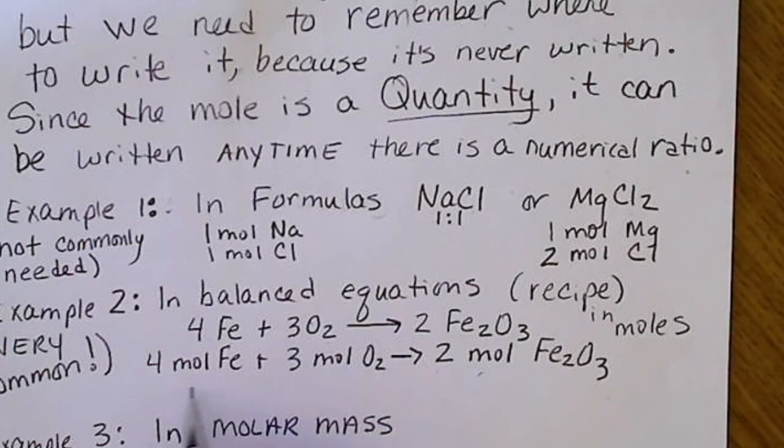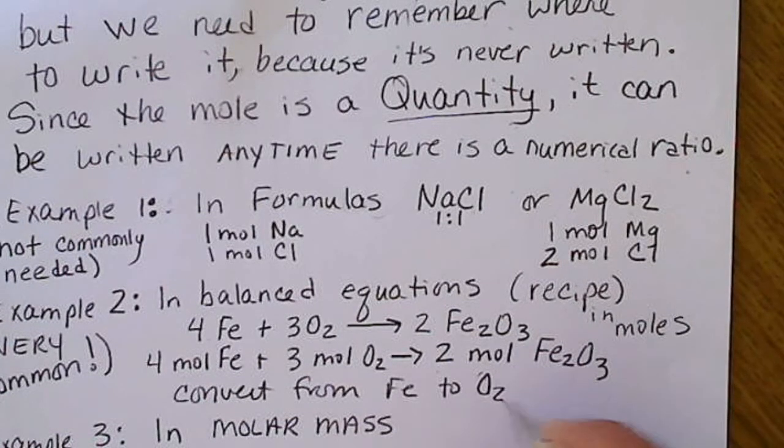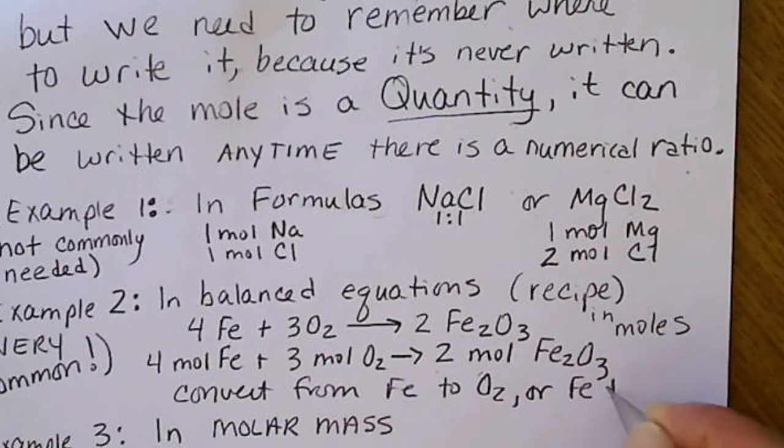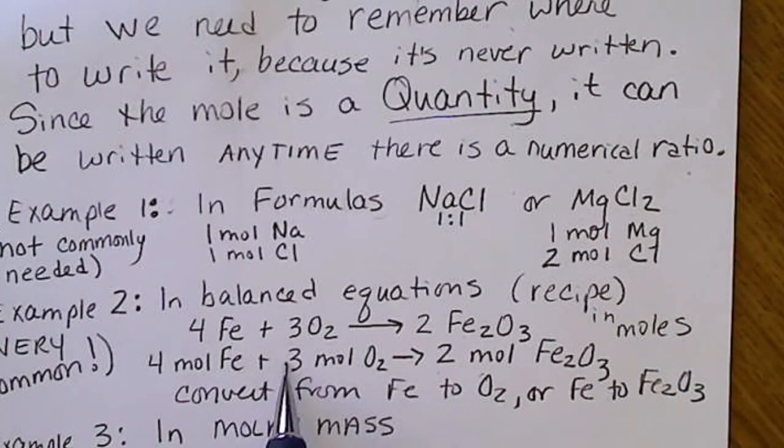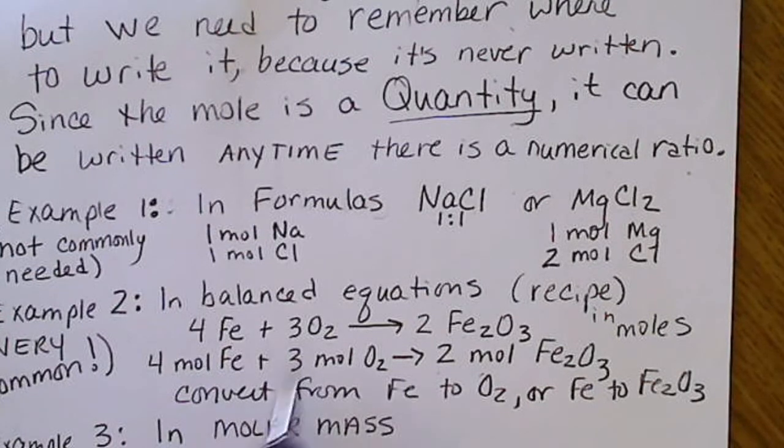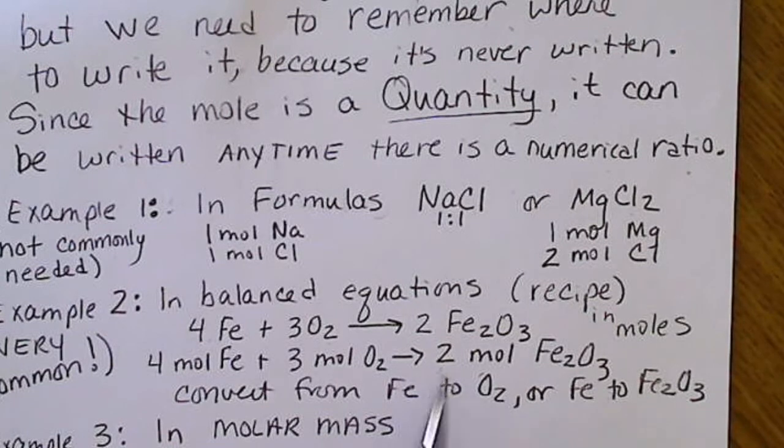So we'll use this to convert, for example, from iron to O2, or from iron to Fe2O3. So just like all recipes, we can use any multiple of this. We could have 8, 6, and 4, or we could cut this down by 2.